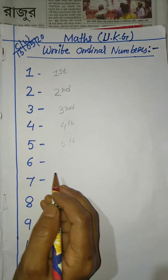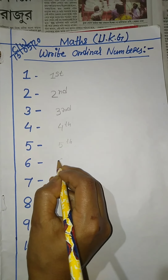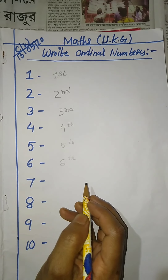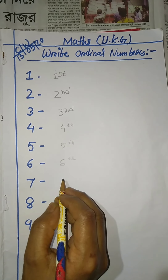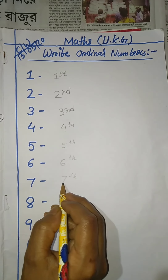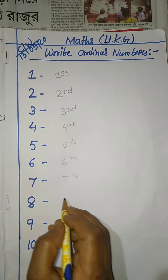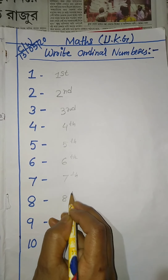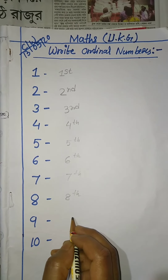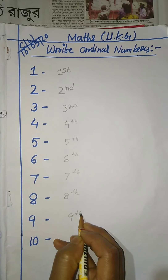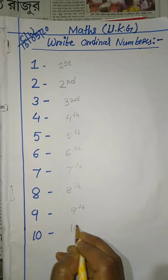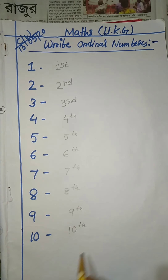Six ordinal number is sixth, seventh. Eight ordinal number is eighth. Nine ordinal number is ninth. Ten ordinal number is tenth. Ok.